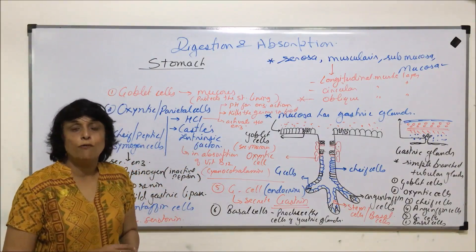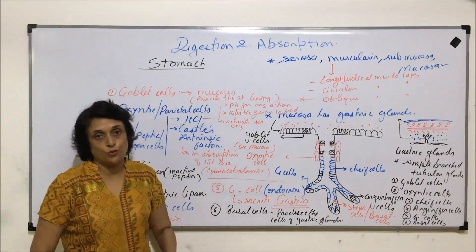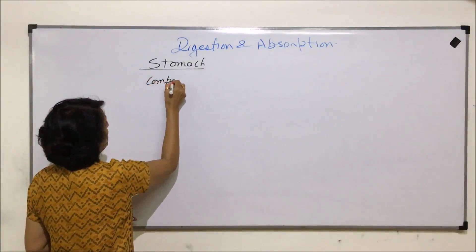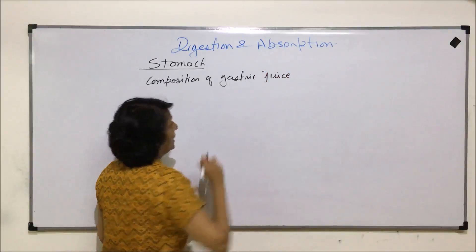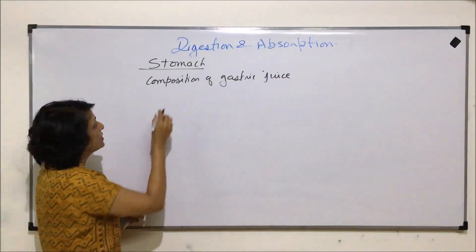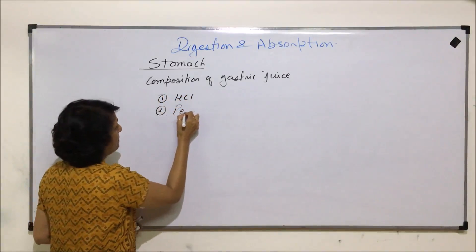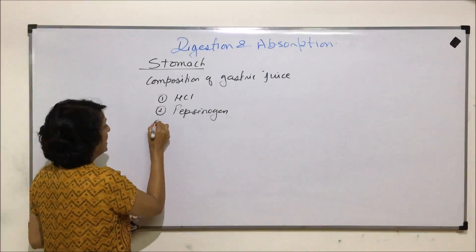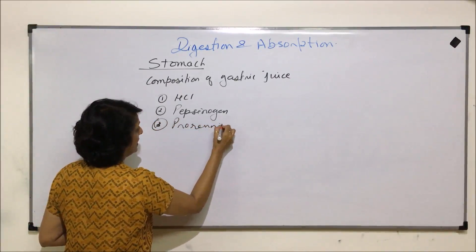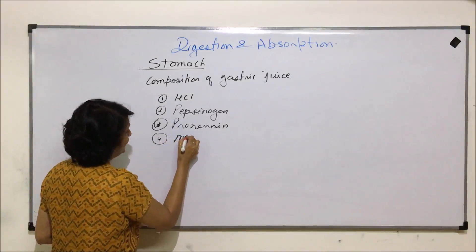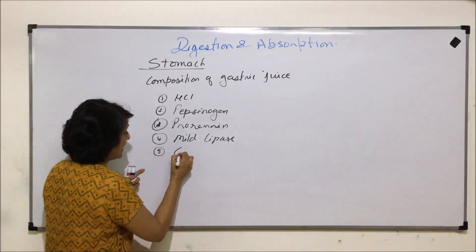Now, coming to the complete secretion of all these cells together is known as gastric juice. Let us take up the composition of gastric juice. It is made up of all the secretions of various cells. It has hydrochloric acid. It has pepsinogen, which is inactive pepsin. It has inactive renin also which is called pro-renin. And one more enzyme that is mild lipase.